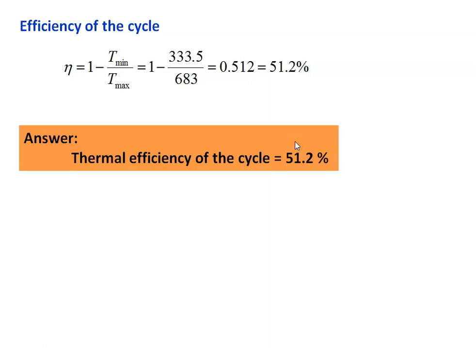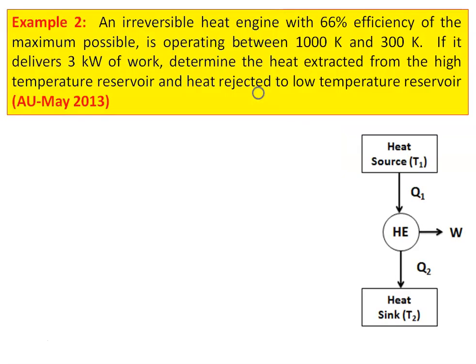Next we calculate the efficiency of the cycle: eta equal to 1 minus T minimum by T maximum, which is equal to 1 minus 333.5 divided by 683 equal to 0.512, which is equal to 51.2 percent. So the thermal efficiency of the cycle is 51.2 percent. We take the second example: a reversible heat engine with 66 percent efficiency of the maximum possible is operating between 1000 Kelvin and 300 Kelvin. If it delivers 3 kilowatts of work, determine the heat extracted from the high temperature reservoir and heat rejected to the low temperature reservoir. This is from the Anna University question paper, May 2013.